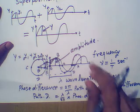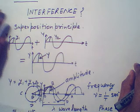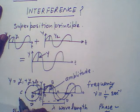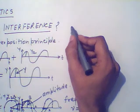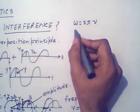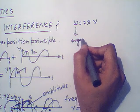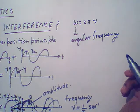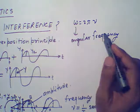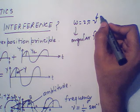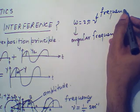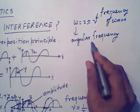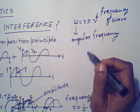Both phase difference and path difference are very important terms for understanding interference. One more term is angular frequency omega. Omega is equal to 2π times nu, where omega is the angular frequency and nu is the frequency of the wave. The relationship between them is omega = 2π·nu, and nu = 1/T.